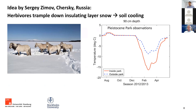Thawing permafrost is, in a sense, dangerous for our future climate. The idea by Sergei Zimov — I think 20 years back — was that in the past, in the Pleistocene era, we had a completely different ecosystem in these permafrost regions. In particular, we had huge herbivores like mammoths, and a lot of horses and other herbivores. This kind of different ecosystem probably promotes permafrost.